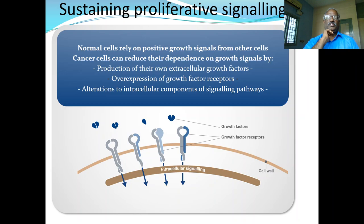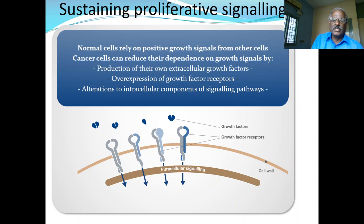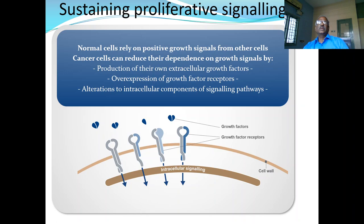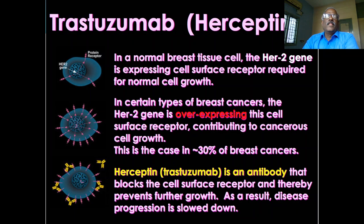The third is sustaining proliferative signaling. Growth factors and their receptors, with intracellular signaling like cyclic AMP, protein kinase, phosphorylase, and ATP, provide signals for cell growth. Normally, cells rely on positive growth signals from other cells. Cancer cells can reduce their dependence on growth signals by producing their own extracellular growth factor, or by over-expression of growth factor receptors, leading to alterations in intracellular signaling pathways and proliferation of the cell.